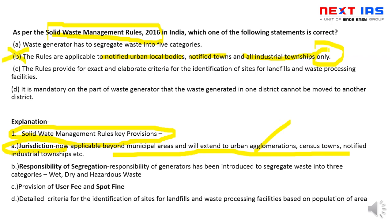Waste generator की responsibility है कि waste को segregate करें — तीन categories में: wet, dry, और hazardous। आपने dustbin का अलग-अलग color देखा होगा — green और blue। Comment box में बताएं: wet के लिए कौन सा color है, dry के लिए कौन सा। Statement A जो कहती है waste generator को 5 categories में segregate करना होगा, वो गलत है — यह 3 categories में होता है। So statement A is wrong and statement B is wrong.